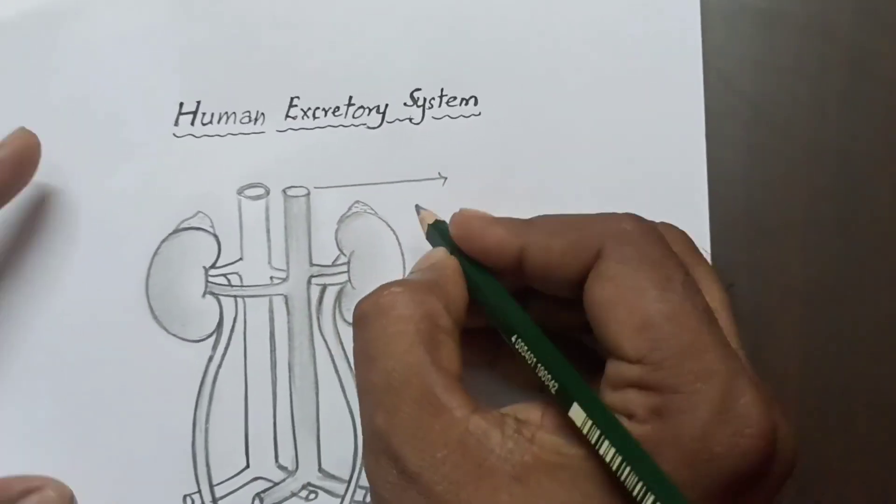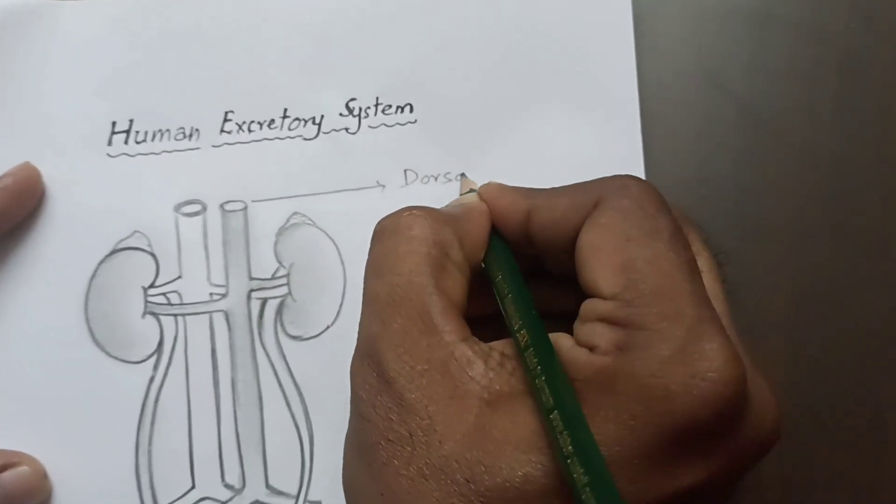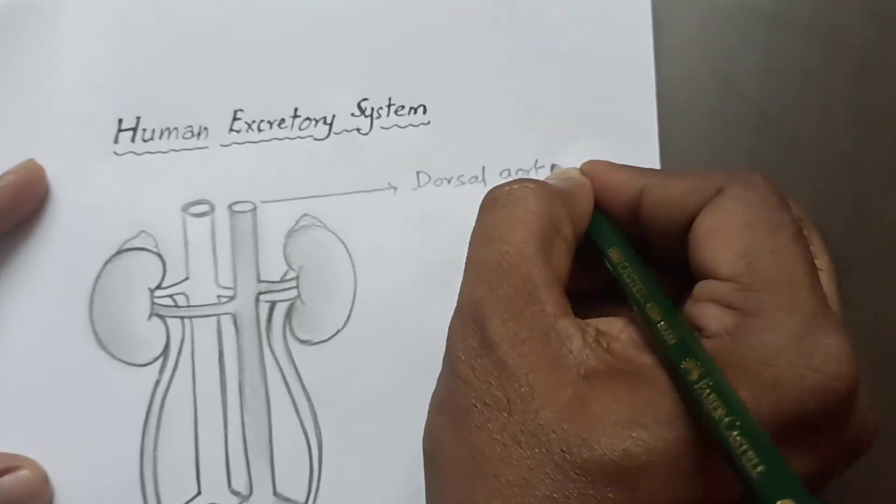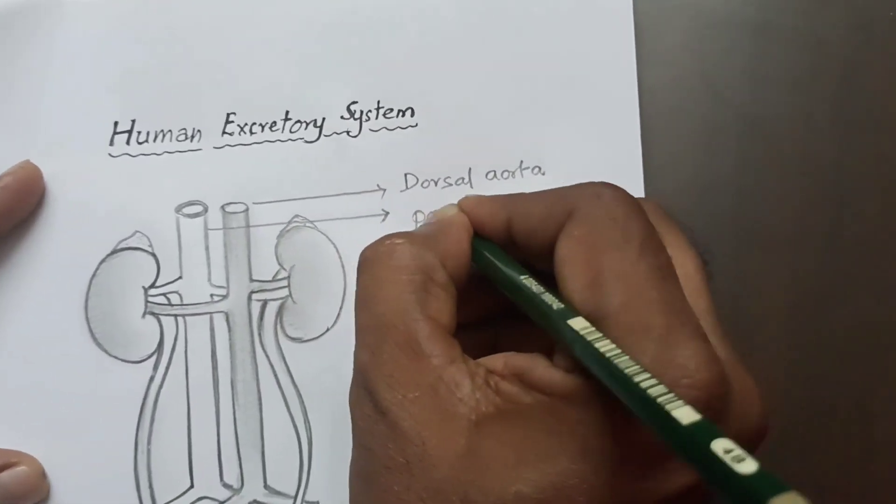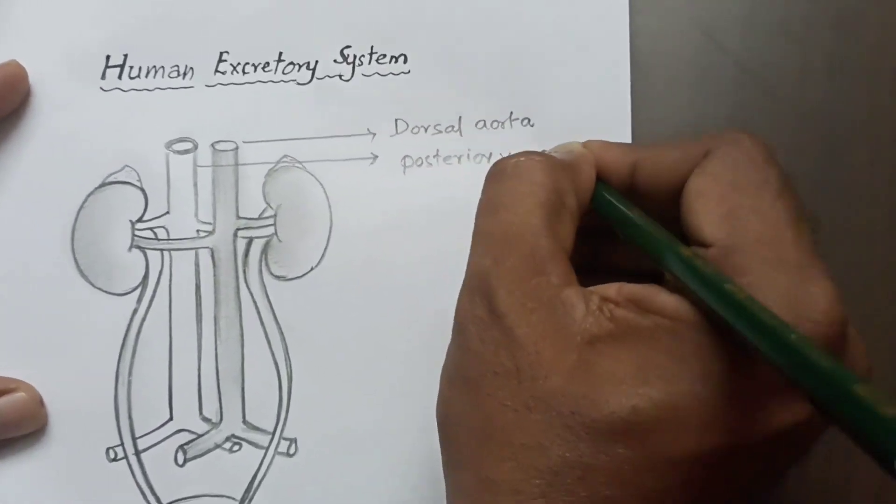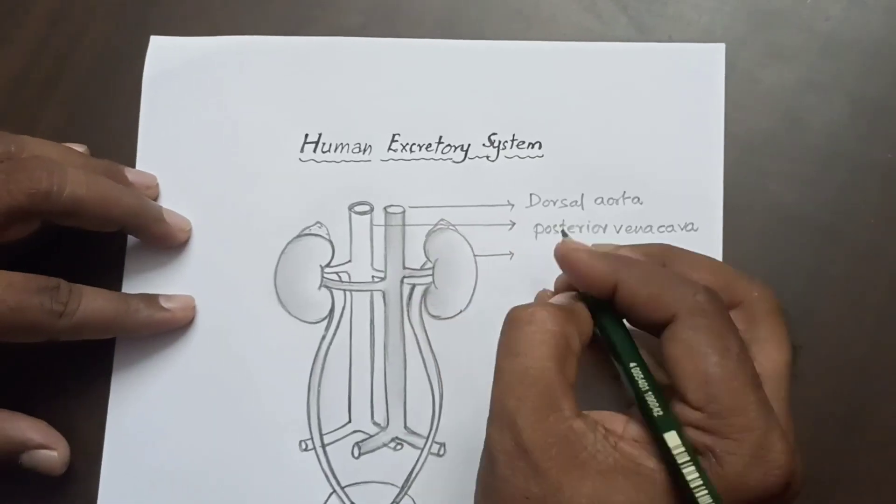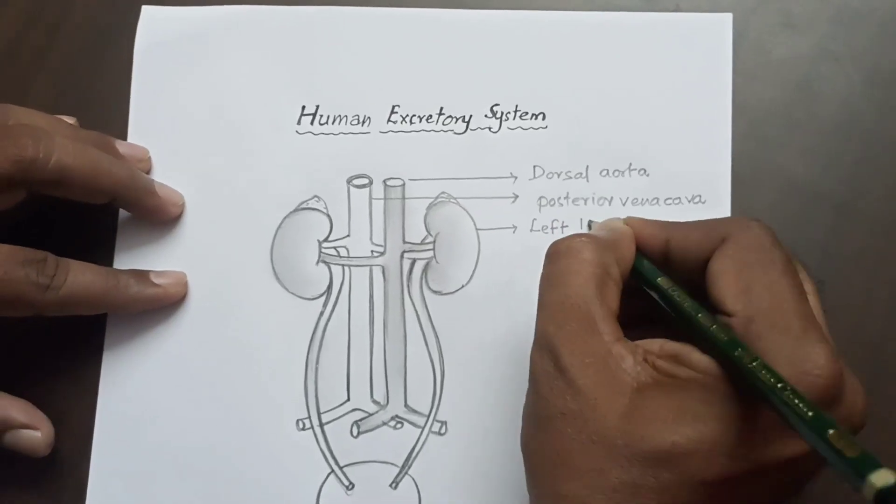Now I am going for labeling. This is dorsal aorta. This is posterior vena cava. This is the left kidney.